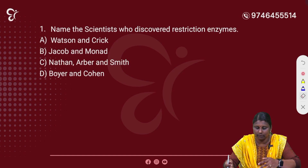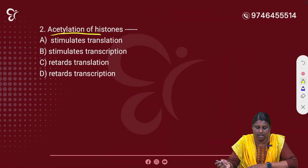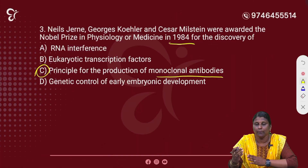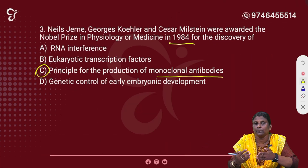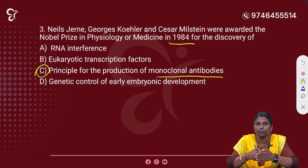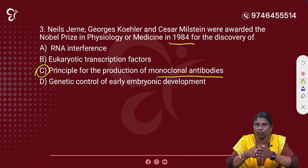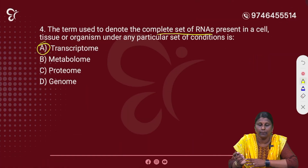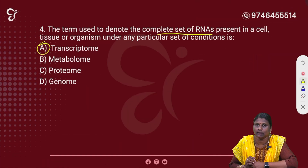Name the scientist who discovered restriction enzymes. What is the acetylation of histones? What are monoclonal antibodies? When we have a disease in cancer, we call it monoclonal antibodies — we call it clones in the lab. We call it a complete set of mRNAs; we call it a transcript.